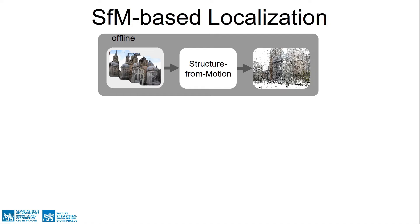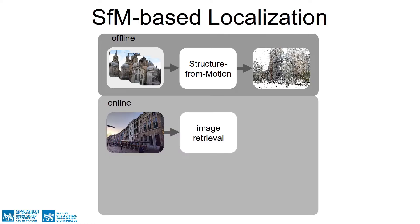In current state-of-the-art pipelines, the offline part consists of running structure-from-motion on top of database images. In the online part, image retrieval finds a set of database images similar to the query, and feature matching establishes point correspondences between the query and each of the retrieved database images.